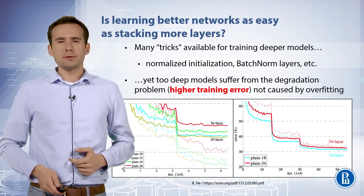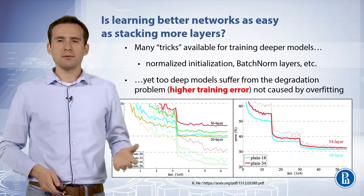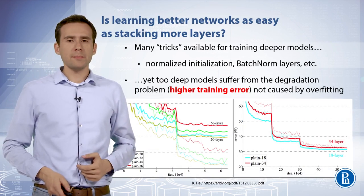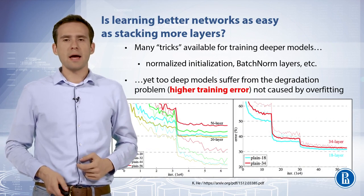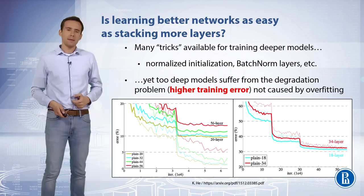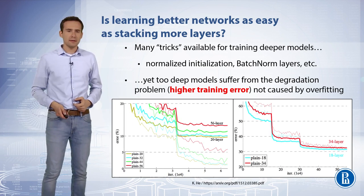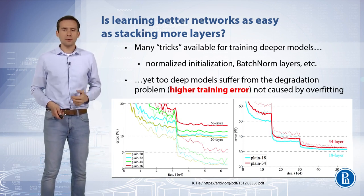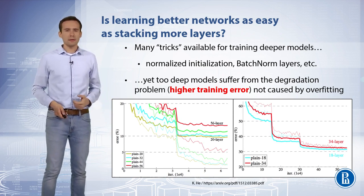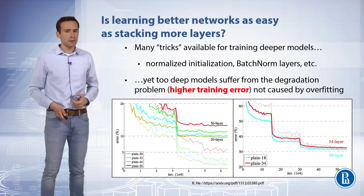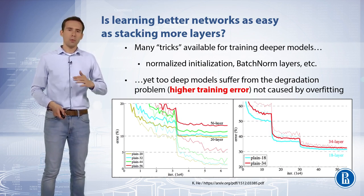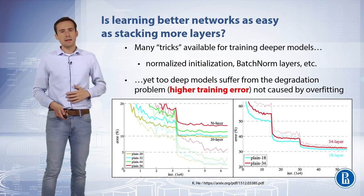When deepened networks are able to start converging, a degradation problem has been exposed. When the network depth is increased, accuracy gets saturated, which might not be that surprising, but then it degrades rapidly. Unexpectedly, this degradation is not caused by overfitting, so we cannot regularize. Adding more layers to a suitably deep model leads to higher training error — that's what happens when we just try to stack more convolutional layers on top of each other.